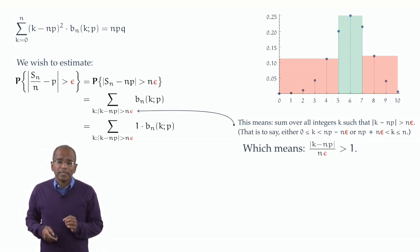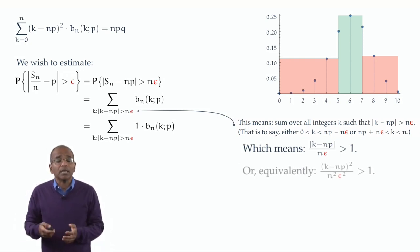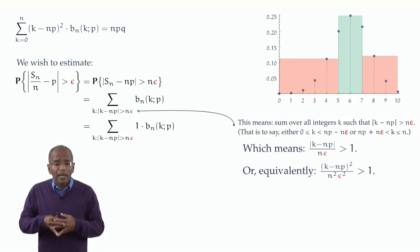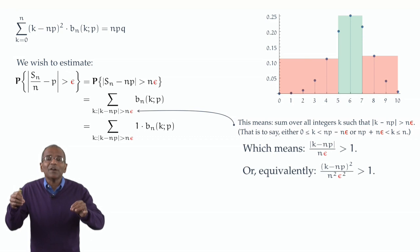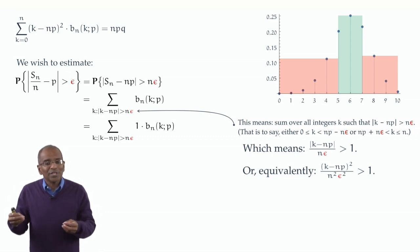Or yet another way of looking at it. If I have a number, say x, which is bigger than 1, then x times x is certainly also bigger than 1. Think of x as the fraction absolute value of k minus np divided by n epsilon. The square of this number, then, is also bigger than 1. And so equivalently, our summation is over all integers k for which k minus np, the whole squared, divided by n squared epsilon squared, is bigger than 1.